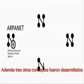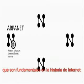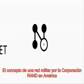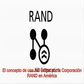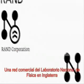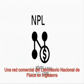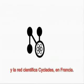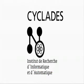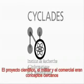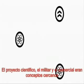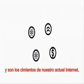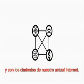Furthermore, three other concepts were to be developed, which are fundamental for the history of the Internet: the concept of a military network by the RAND Corporation in America, the commercial network of the National Physical Laboratory in England, and the scientific network Cyclades in France. The scientific, military, and commercial approaches of these concepts are the foundations for our modern Internet.